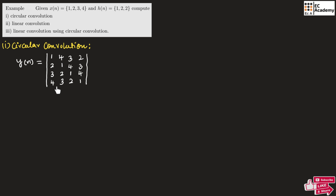You need to remember this matrix will depend upon the number of elements in x of n. If x of n has 5 values, then we need to write a 5 cross 5 matrix. Since here 4 elements are given, we write a 4 cross 4 matrix for x of n. Then we will multiply this x of n matrix with h of n, which is 1, 2, 2, and we append 0 because the length of h of n must equal the length of x of n.